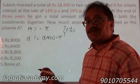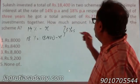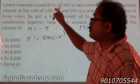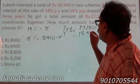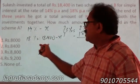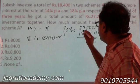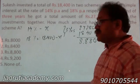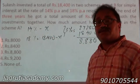How much is the total interest? The total interest is amount minus sum. That's 27,280 minus 18,400. This gives us the simple interest from both schemes over 3 years. That comes out to 8,880.